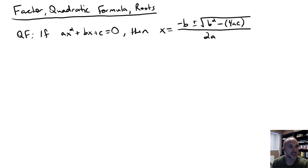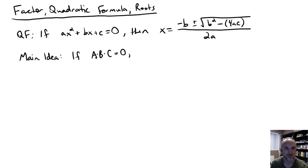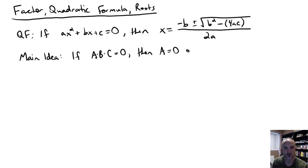Let's also motivate the main idea behind factoring. If we have a times b times c equals 0, and you multiply three things together and get 0, that means at least one of them has to be 0. So a could be 0, or b could be 0, or c could be 0 — one of those three at least has to be true. We're going to use that quite a lot.